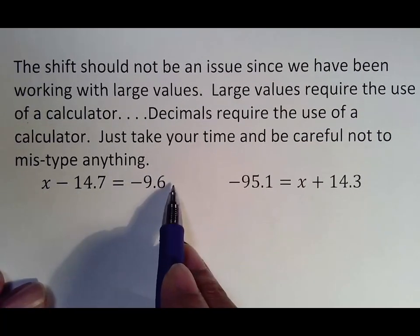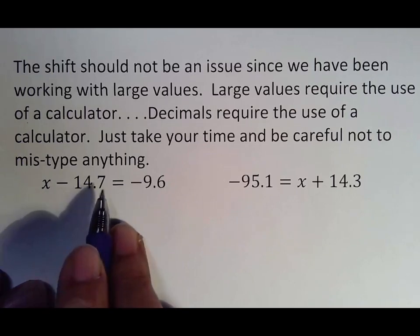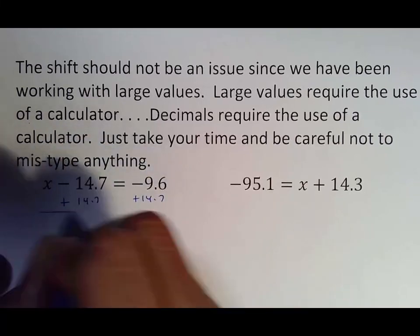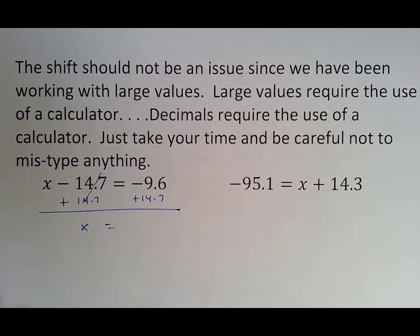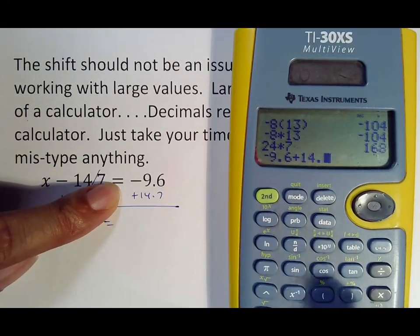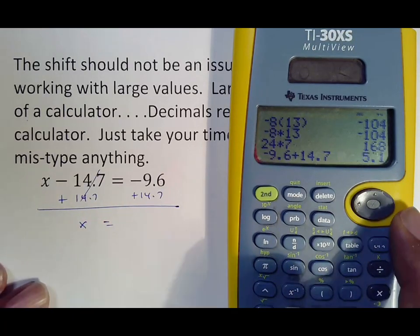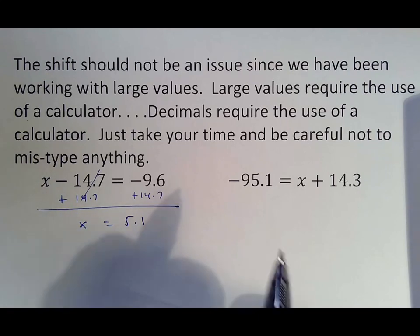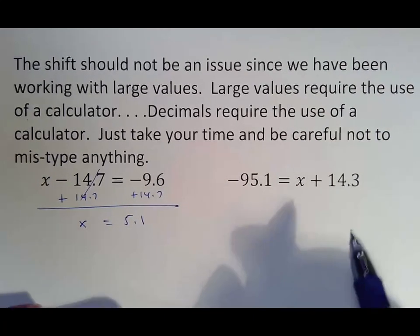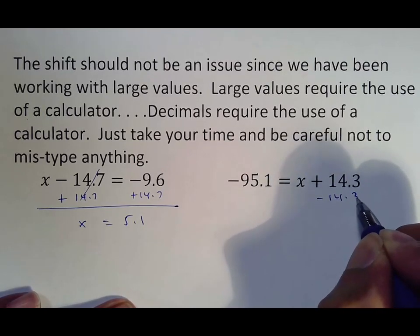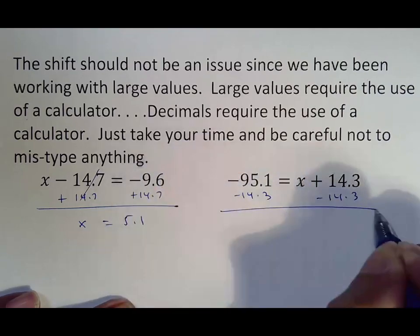X minus 14.7 equals negative 9.6. The negative 14.7 is with X and the way we move it is by adding 14.7. X comes down, that goes away. Typing it in, that's a negative 9.6 plus 14.7, which gives us the answer of 5.1. The calculator does the work in terms of making sure you get the right answer, but you have to make sure you know what you need to do to get there. Negative 95.1 equals X plus 14.3. The number with X is 14.3. It's a positive 14.3. So we want to move it by making it a negative 14.3.